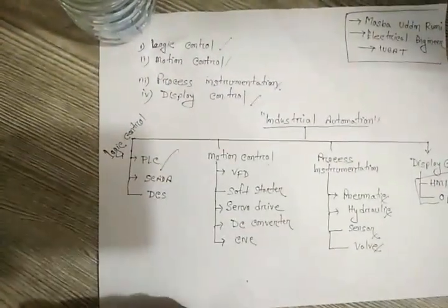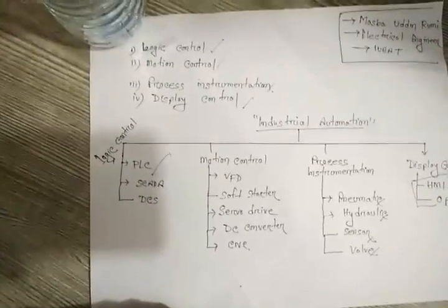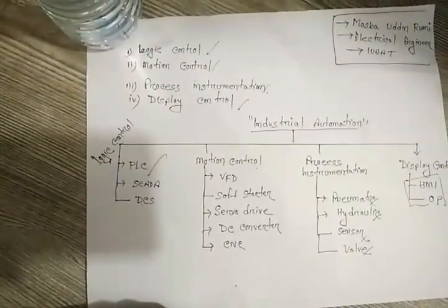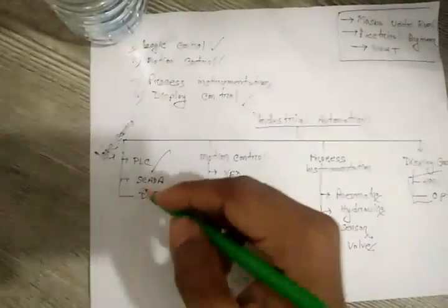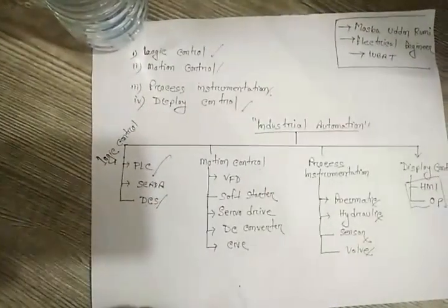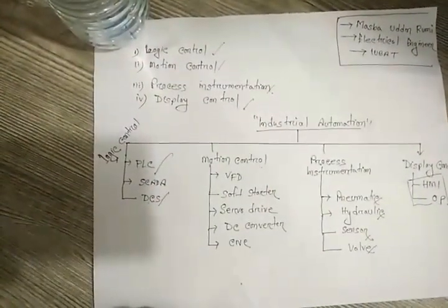Second is SCADA, SCADA is supervisory control and data acquisition. The last one is DCS, DCS means distributed control system.